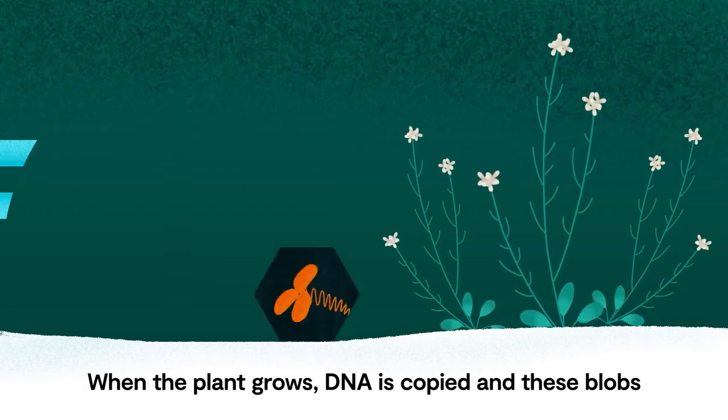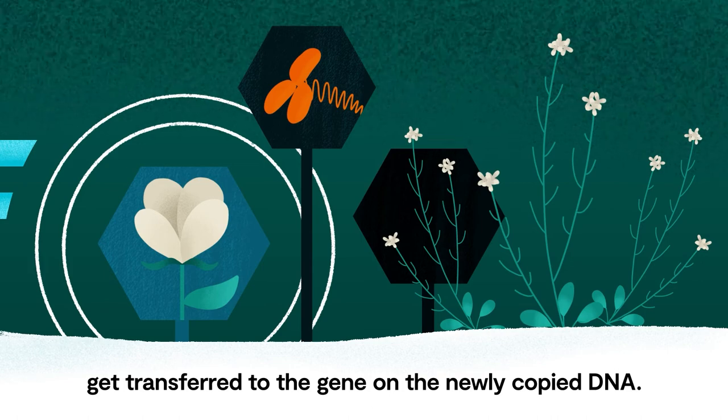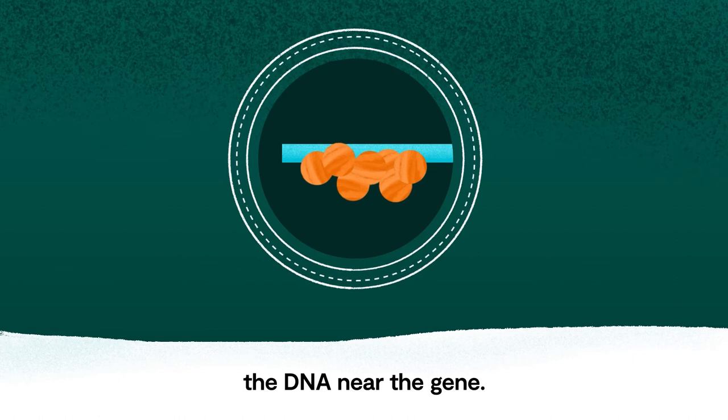When the plant grows, DNA is copied and these blobs get transferred to the gene on the newly copied DNA. This is in addition to changes in proteins that wrap the DNA near the gene.